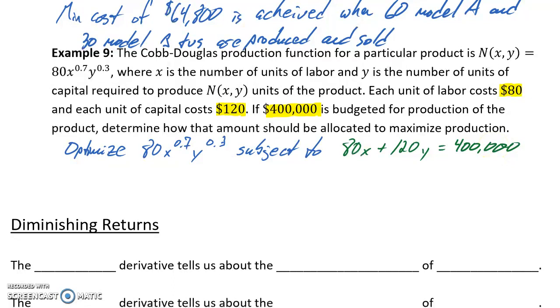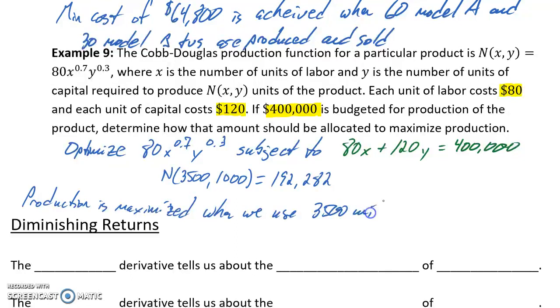So turning back to Wolfram Alpha, we could optimize that function, and we would get a result of N(3500,1000) equal to 192,282, which would tell us that production is maximized when we use 3,500 units of labor and 1,000 units of capital. And that optimized production level would be 192,282 units.